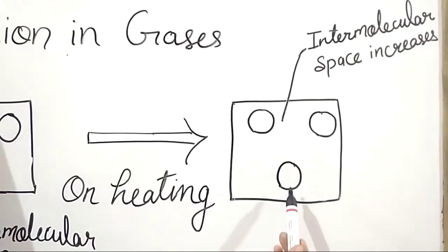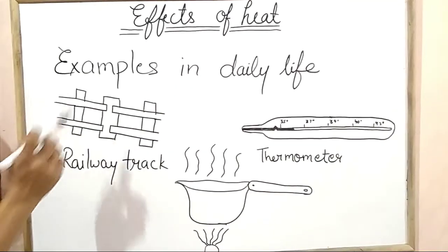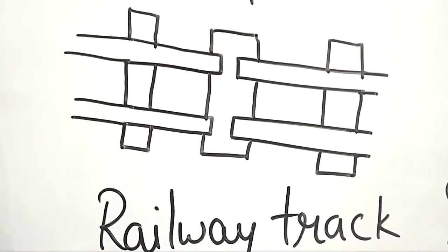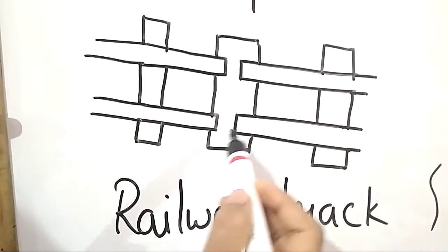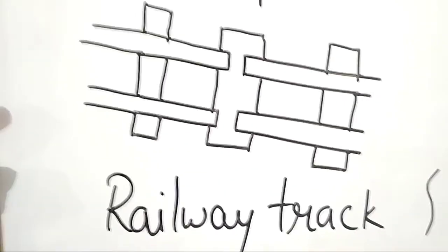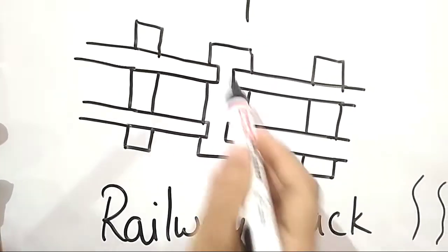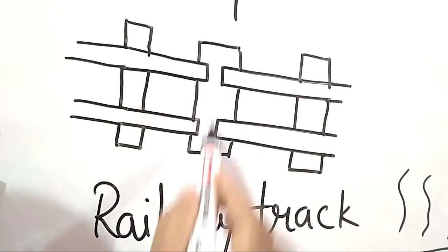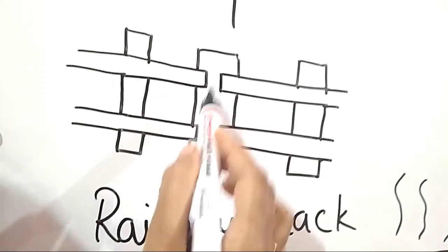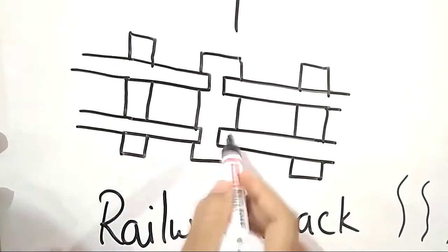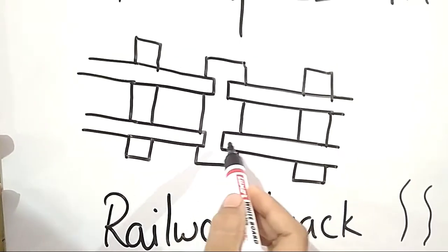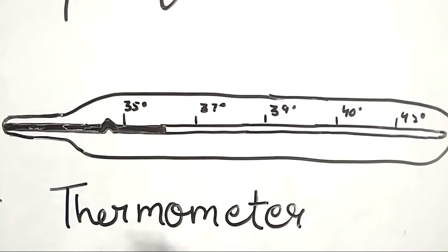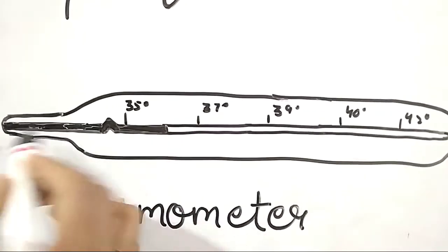The expansion of gases is very large compared to solids and liquids. Here are some examples of expansion in daily life. For expansion in solids, you can see this diagram of a railway track. These tracks are made of iron, which expands on heating. A space is left between the tracks so that in summer, when they expand, they fill this space. If no space were left, they would overlap and could cause accidents.